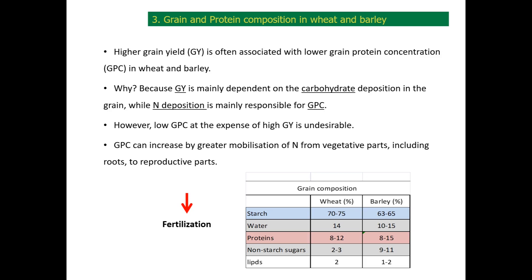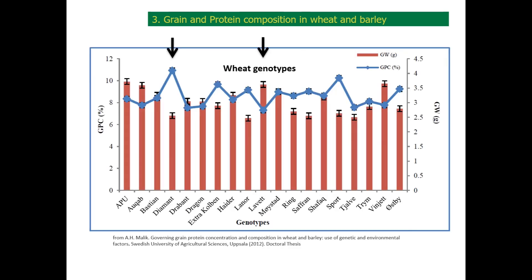Low grain protein content with high grain yield is undesirable. Grain protein content can increase by greater mobilization of nitrogen from vegetative parts including roots or leaves. Other than natural absorption of nitrogen through the roots or plant-microbe exchange, nitrogen levels in the plant can increase by means of fertilization. This figure shows the negative trend between grain protein content and grain yield for a variety of wheat genotypes.